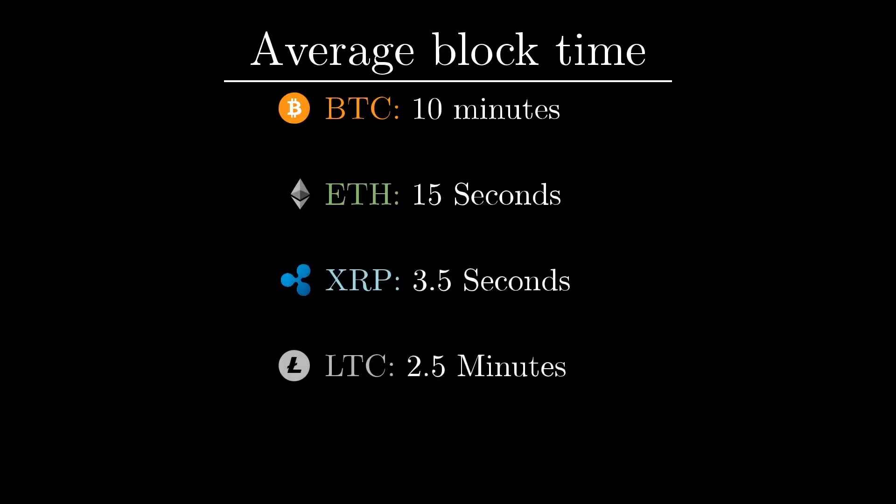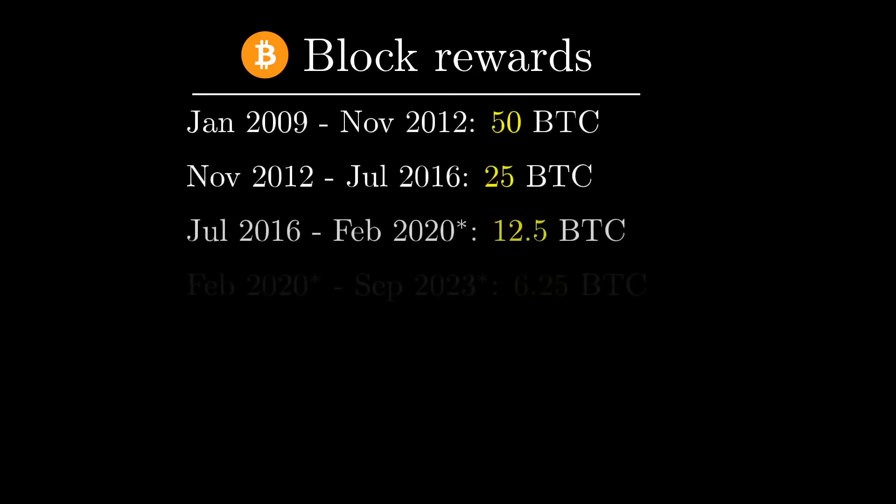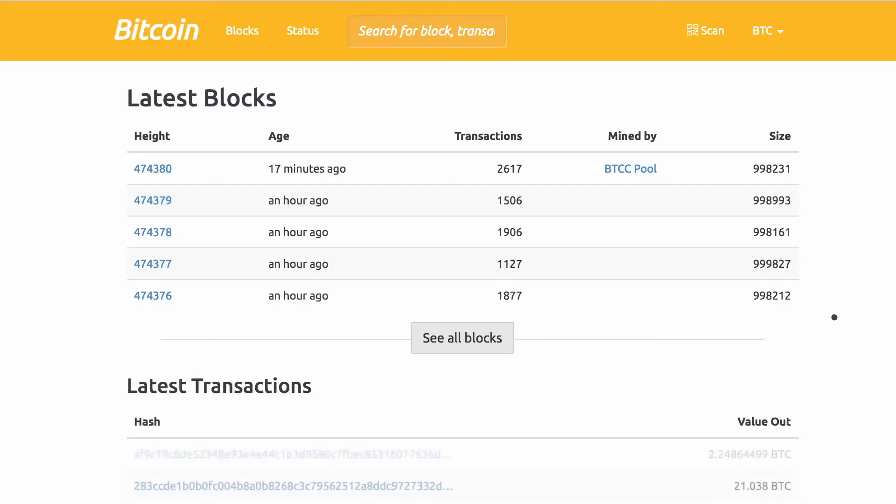Many newer cryptocurrencies actually have much shorter block times than that. And all of the money in Bitcoin ultimately comes from some block reward. In the beginning, these rewards were 50 bitcoin per block.